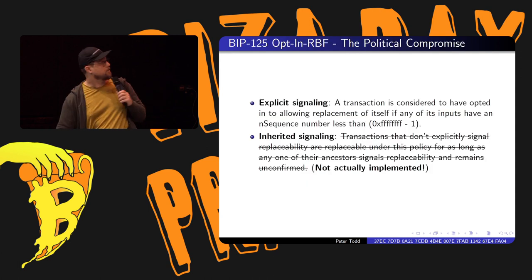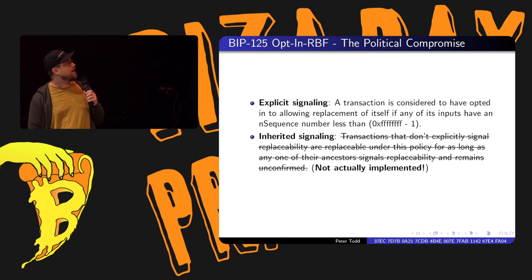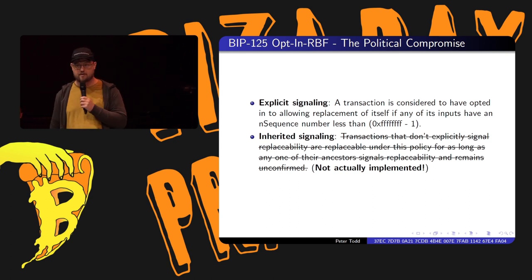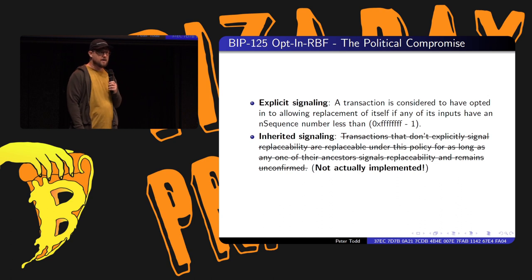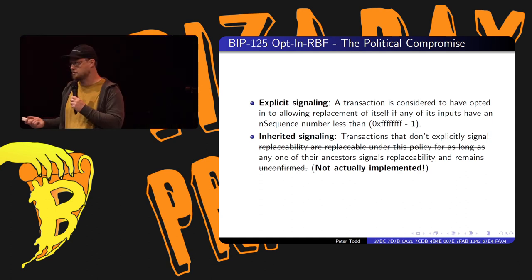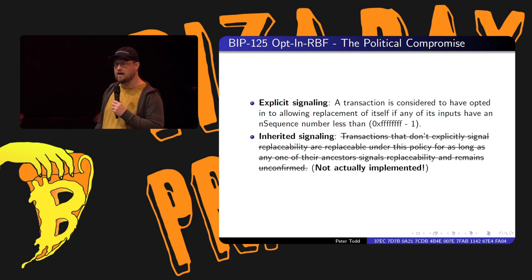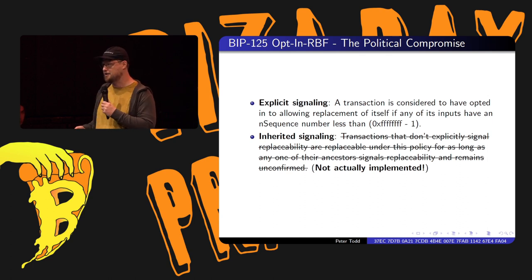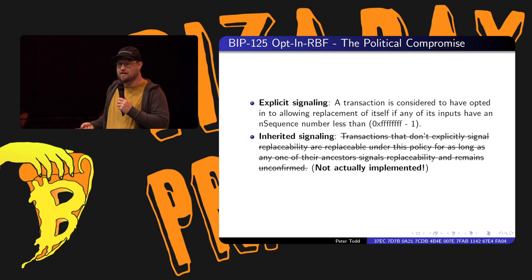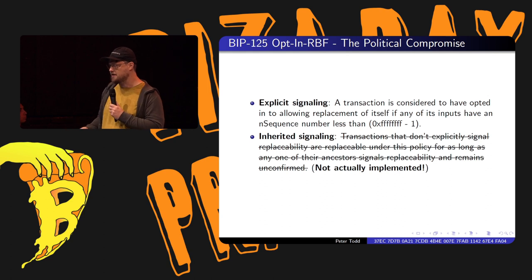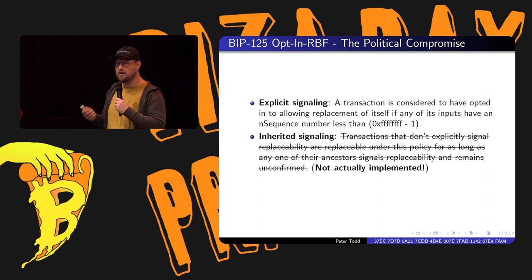This led to a crazy political compromise called BIP-125. Unfortunately my name is on that BIP and I'm kind of at fault here. Basically it was a way to say some transactions will have the silly first-seen rule, other ones will just do replace by fee. You can read the technical details - it uses the nSequence field. But more importantly, this creates a big mess, because sometimes you can't easily replace a transaction. Sometimes you send money and you can't easily get it fixed when it gets stuck. There's also a privacy concern, because now you have two classes of transactions which further divides up the anonymity set.